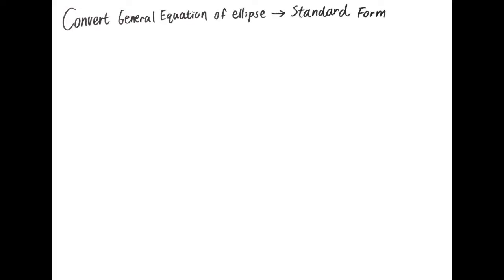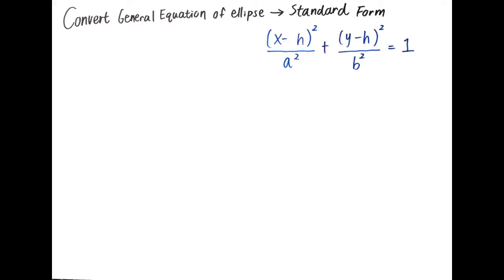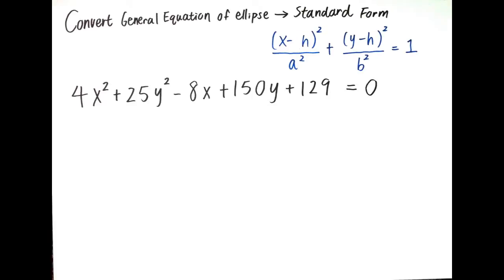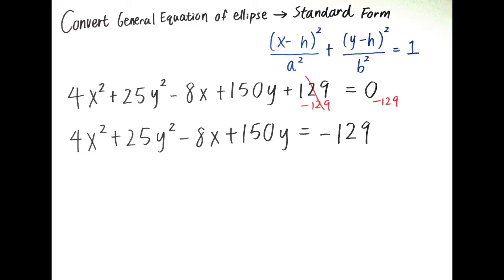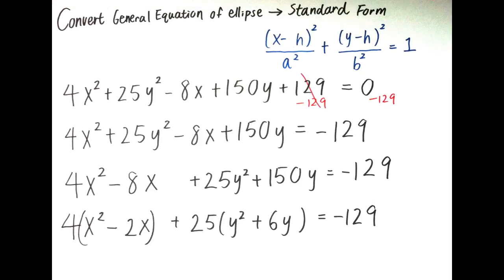Now we are going to convert the general equation of the ellipse into standard form. The standard form of the ellipse is (x minus h) squared divided by a squared plus (y minus k) squared divided by b squared equals 1. First we can subtract 129 from both sides, then we rearrange the x terms and the y terms. Next we can factor these two expressions.